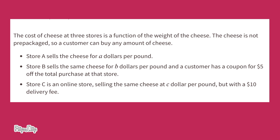Right away I noticed some differences. Store A sells the cheese for A dollars per pound, but Store B sells the same cheese for B dollars per pound and a customer has a coupon for five dollars off the total price at that store. Store C is an online store selling the same cheese at C dollars per pound but with a ten dollar delivery fee tacked on to every order.